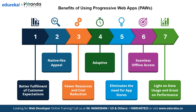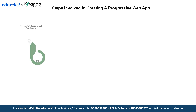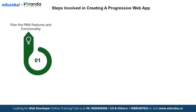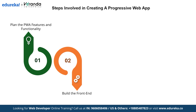Now let's shift our focus to understanding the steps involved in developing a progressive web app. Building a progressive web app is a step-by-step process that ensures the application is reliable, high-performing and user-friendly. We start with planning the progressive web app's features and functionality, where we define the app's purpose, identify the target audience and list the key features it will provide - this ensures we have a clear roadmap to follow. Next is building the front-end, where we focus on creating a responsive and engaging user interface using technologies like HTML, CSS and JavaScript, ensuring the app delivers a consistent experience across devices.